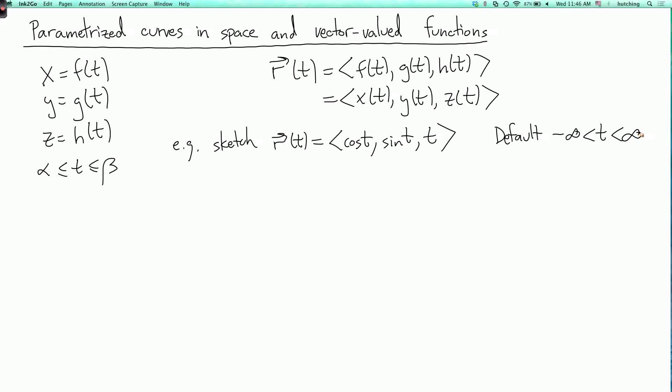So the x and y components describe a curve that goes around and around the unit circle, while the z component is moving up at unit speed. So that means it always lies on the cylinder x squared plus y squared equals one.